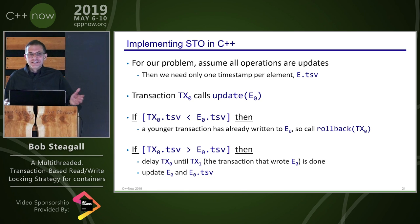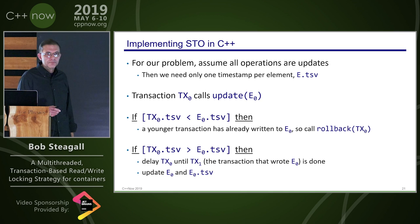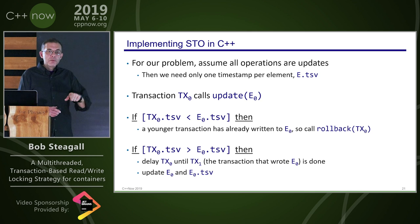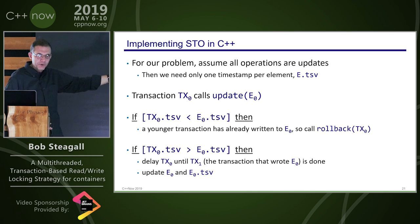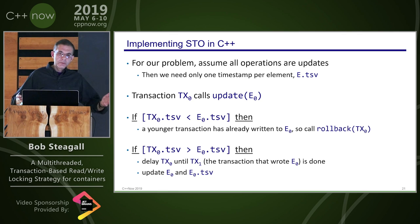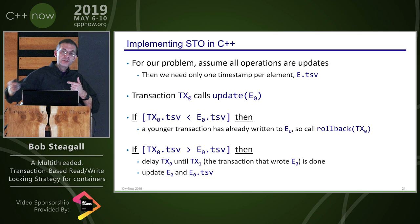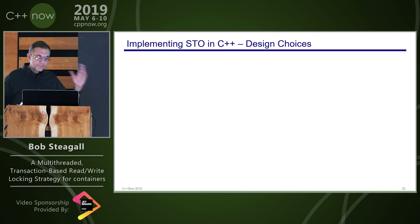By rolling back, the transaction gives up and begins a new transaction. The very first thing a new transaction does is get a new timestamp value so it can now be a younger transaction and potentially win.